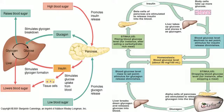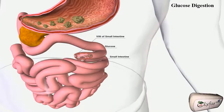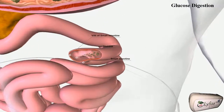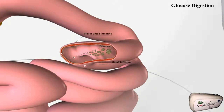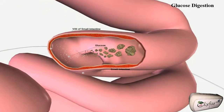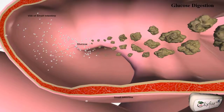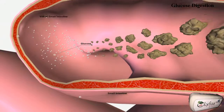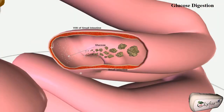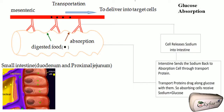The carbohydrate part of food gets digested into monosaccharides like glucose and fructose, and about 80% of them are generally glucose, which are now present inside the small intestine. The process of sending this glucose from the small intestine to the bloodstream is called the glucose absorption process.